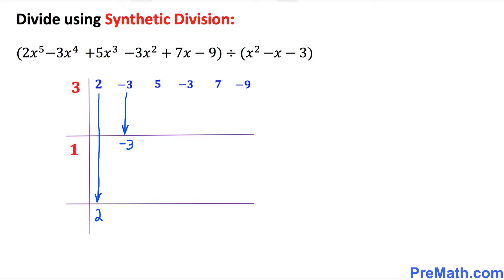The next step is we are going to multiply. I want you to multiply this 1 times 2 diagonally. 1 times 2 is 2, so this 2 is going to show up right here. Likewise, this 3 is also going to get multiplied by this 2 — 3 times 2 is 6, so 6 is going to show up right up here.